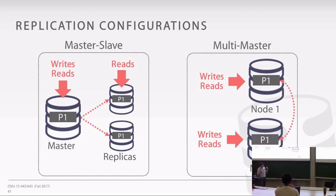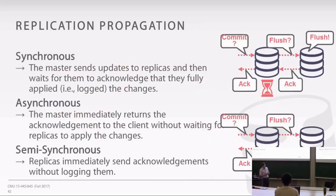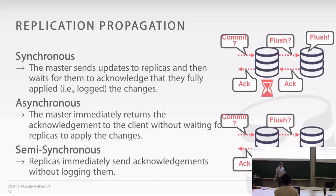Regardless of setup, you can also change how much the master has to wait for the replica to fully commit before sending the acknowledgement back. This is about sacrificing durability or consistency — committing to master and telling the application it's done, but if you crash before propagating to the replica, data gets lost. With synchronous replication, the master sends updates to the replica, waits for it to apply the change and send back acknowledgement, and only then acknowledges to the client. With asynchronous replication, you immediately go back to the application and say your write is done, without waiting for the replica to flush.